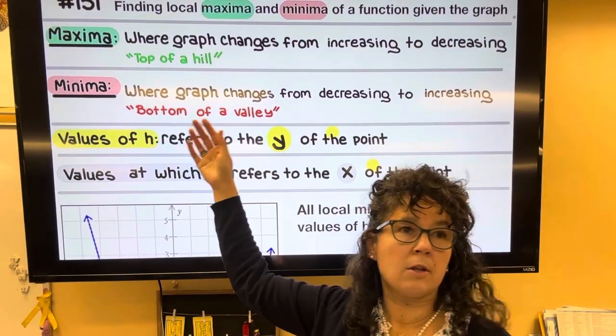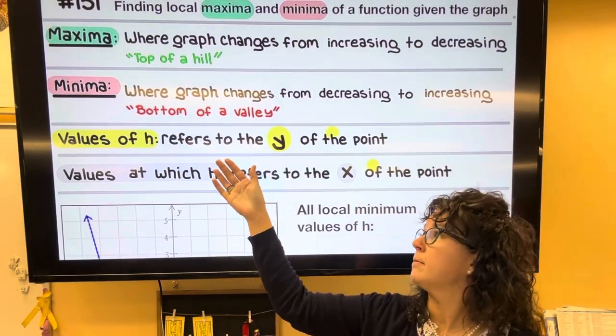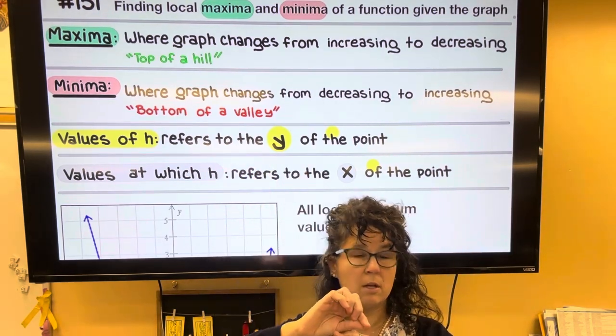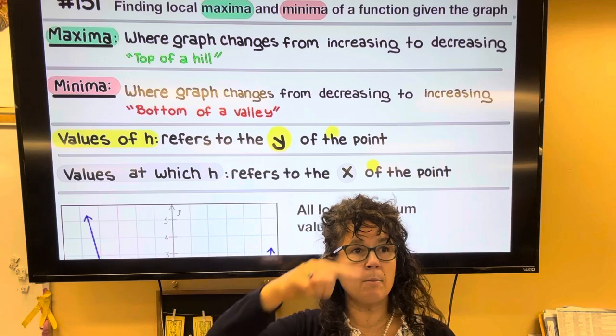We're going to find what's called a maxima and a minima. Simply put, a maxima is the top of a hill and a minima is the bottom of a valley.